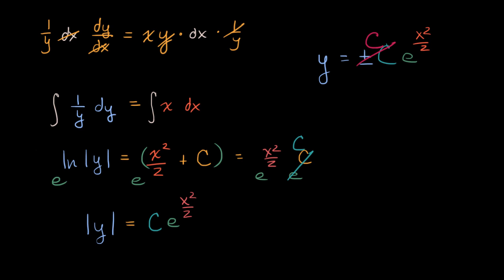So we could say that y is equal to, I'll just rewrite it over again. Y is equal to a red c times e to the x squared over two. This right over here is the general solution to the original separable differential equation.